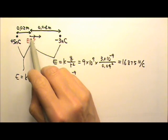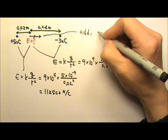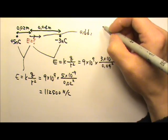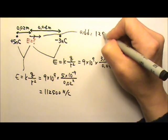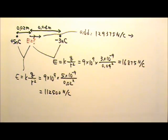Since they are in the same direction, I just have to add them. Adding these two together gives us this much newtons per coulomb, and they go to the right.